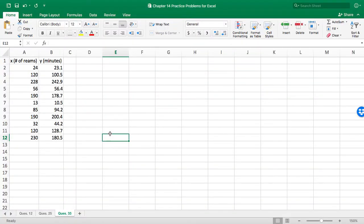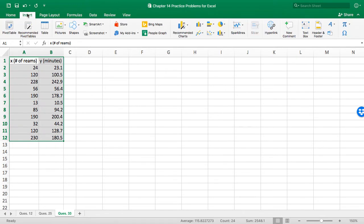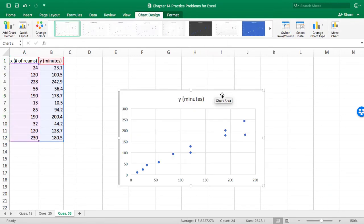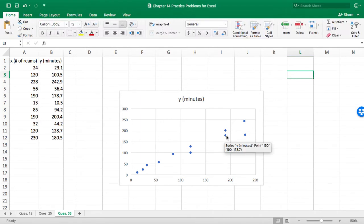So going to Excel, we'll go ahead and create our scatter plot by highlighting our data, going to Insert, finding the option in the charts where it says Scatter, clicking on that, and now we have our scatter plot. And we can see looking at this, we have a positive linear relationship, potentially, where as our number of reams increases, so does the time it takes to count them.